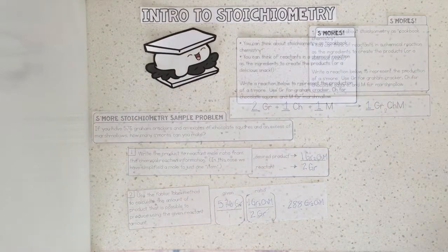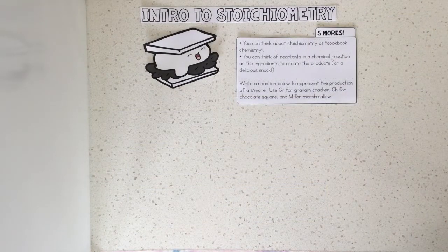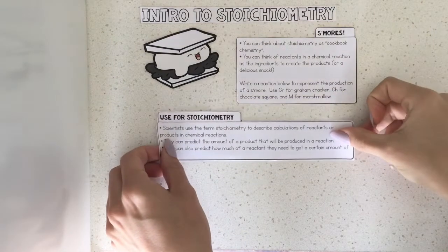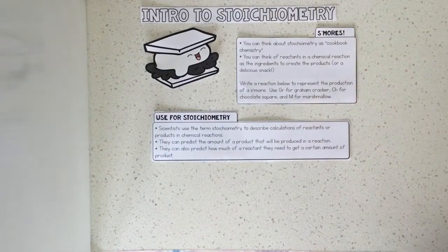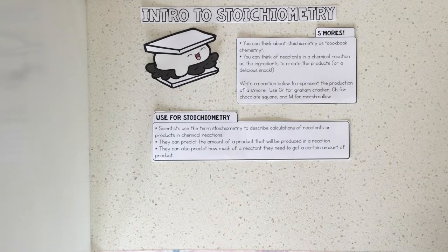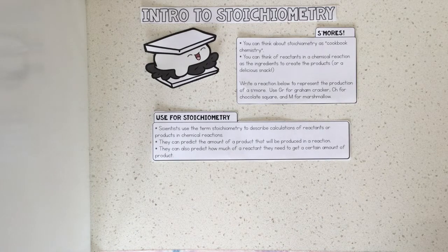This isn't all just cookbook chemistry to a chemist. Scientists use the term stoichiometry to describe calculations of reactants or products in chemical reactions. They can predict the amount of a product that will be produced in a reaction, and they can also predict how much of a reactant they need in order to get a certain amount of product.